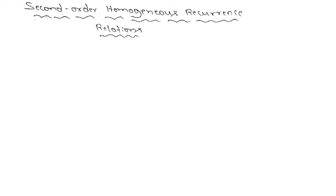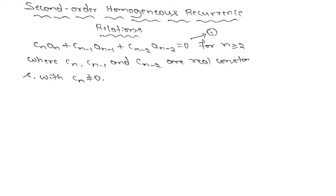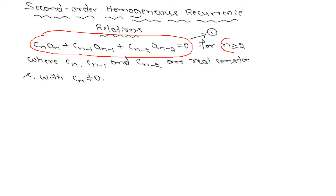Now, let us see second order homogeneous recurrence relations. The second order homogeneous recurrence relation will be of this form: Cn·An plus Cn minus 1·An minus 1 plus Cn minus 2·An minus 2 is equal to 0, where n is greater than or equal to 2. Here Cn, Cn minus 1, and Cn minus 2 are real constants with Cn not equal to 0. That means this should not be equal to 0, otherwise it will not be a second order.